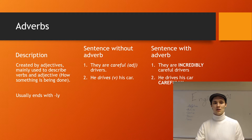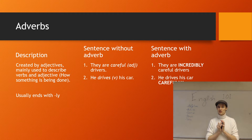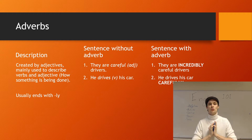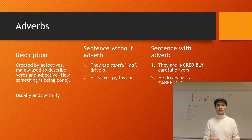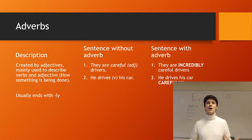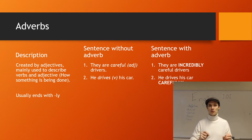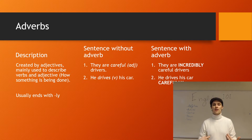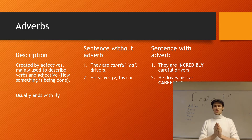Let's move on to adverbs. Adverbs are very similar in a certain sense — they're used to add color, mainly to the verb, but they can also be used in tandem with adjectives. They describe how something is being done. If a verb — which we'll also talk about in another episode — is what we're doing or what is happening, then the adverb describes how that happens. And they usually end with -ly.